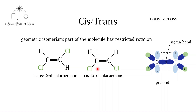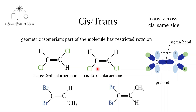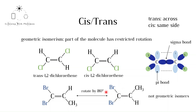If one carbon atom is bonded to two identical groups, then there is no geometric isomer. For example, in 1,1-dibromopropene, this carbon is bonded to two bromine groups. The molecule can also be drawn another way; however, we can convert from one to the other by rotating the whole molecule by 180 degrees. No geometric isomer exists.